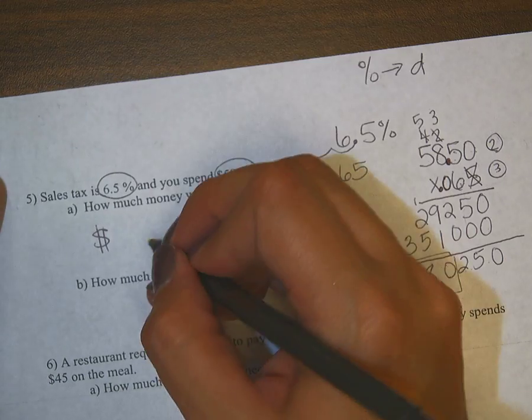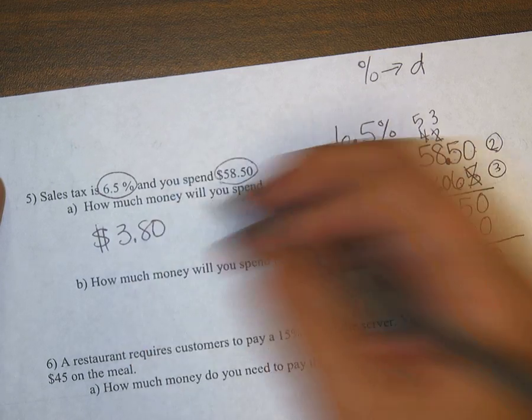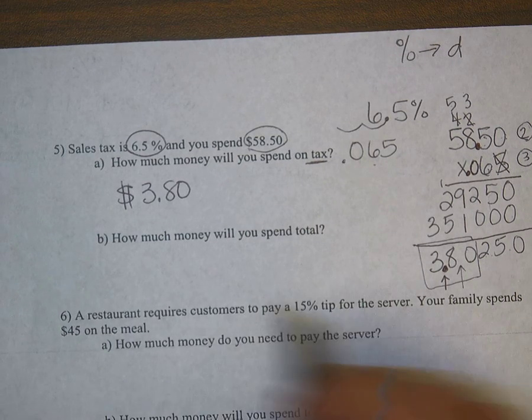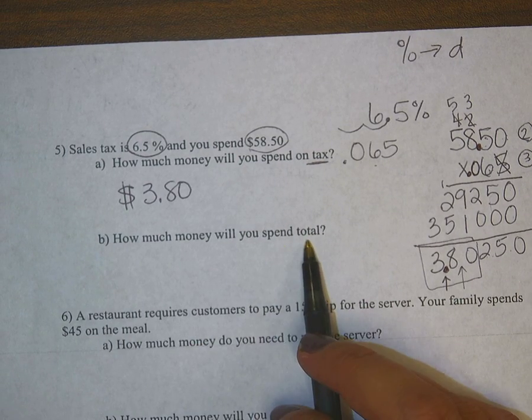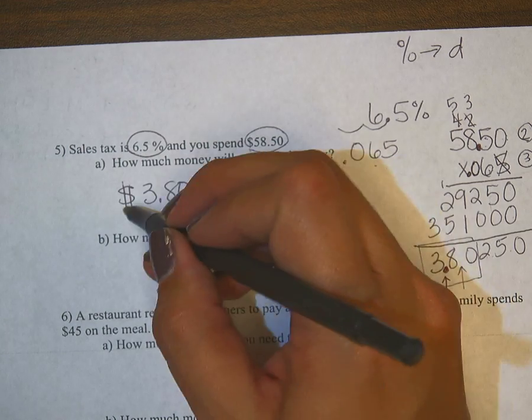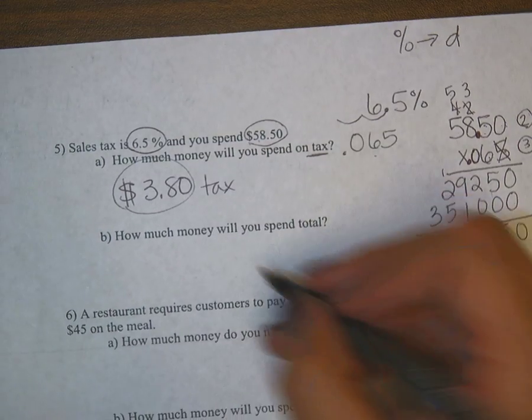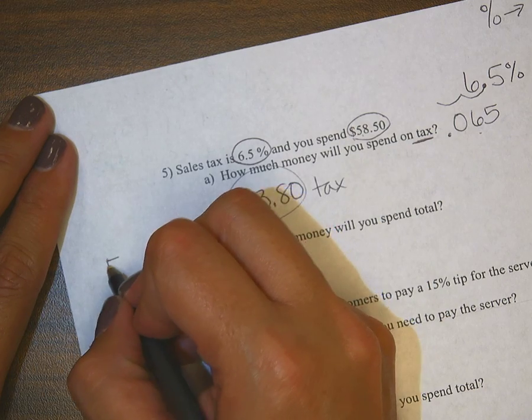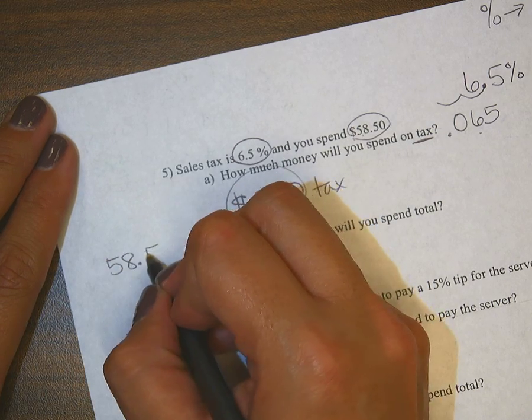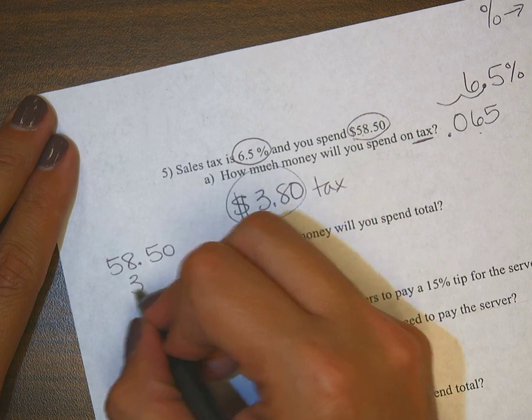Part b says 'How much money will you spend total?' Total now means I'm taking my tax amount plus my original. Here I will line up decimals because I can't add decimals without lining them up.